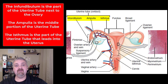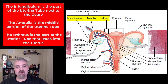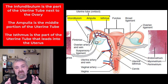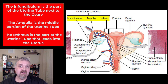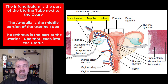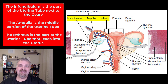The 3 main parts of the uterine tube: we have the infundibulum, which is the large area that has these finger-like extensions called fimbriae, and is near — but not directly connected to — the ovary. Then you have the ampulla, which is right there in the middle, and then the isthmus is the portion of the uterine tube that connects to the uterus.